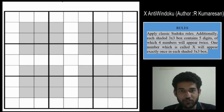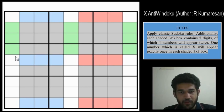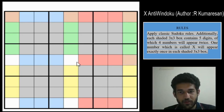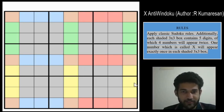In any X-Anti-Windoku Sudoku, the green cells, the blue cells, the red cells, the yellow cells and the brown cells will always contain the digits 1 to 9. Let us see now why this property applies. We will try to explain by taking some instances of digits.